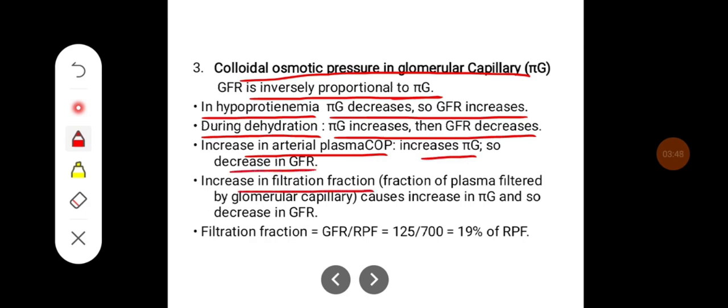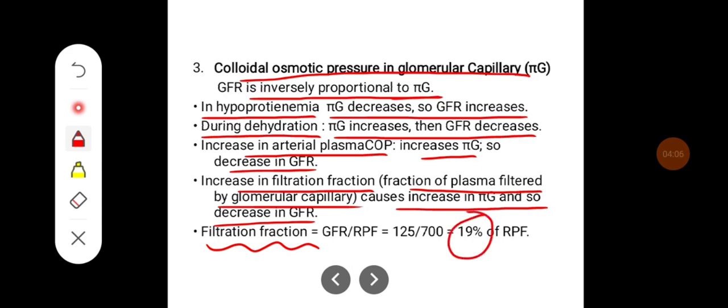An increase in the filtration fraction — the fraction of plasma filtered by the glomerular capillary — causes an increase in pi G and so decreases GFR. Filtration fraction is given by GFR divided by renal plasma flow, which is around 19 percent.